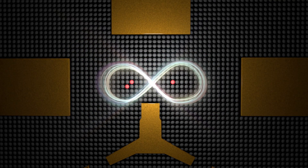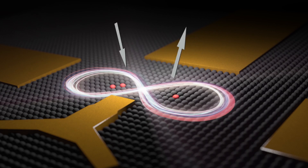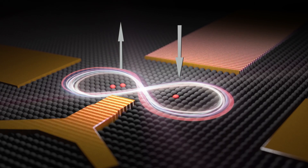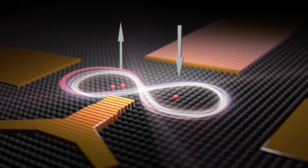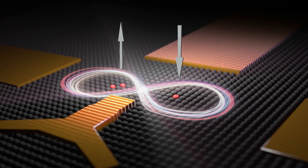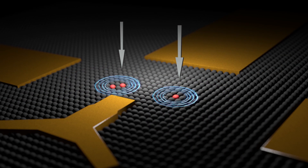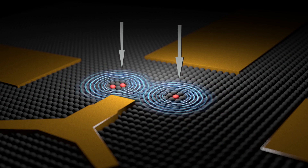When the spins begin pointing in the opposite direction, they will swap their spin states and, when measured, will always point in the opposite direction. However, if they're pointing in the same direction to begin with, no interaction will occur between them.